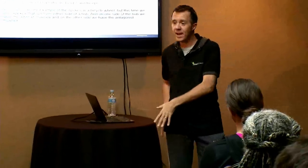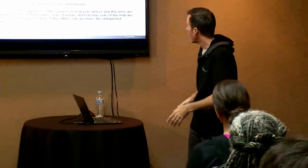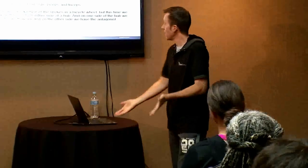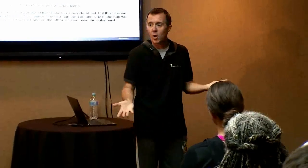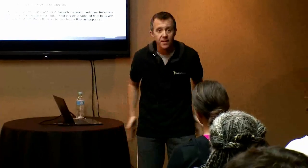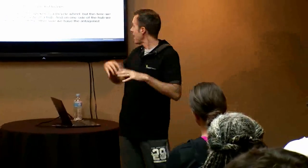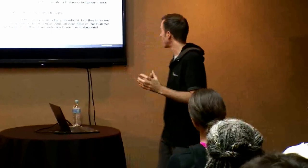These two muscle groups create a balance between each other, and when they are in balance, everything's fine. Another example is the biceps and the triceps — opposing muscle groups. Another one is the groin on the inside of your legs and then the outside of your legs. Everywhere in the body you have these agonist-antagonist relationships where they balance out each other.